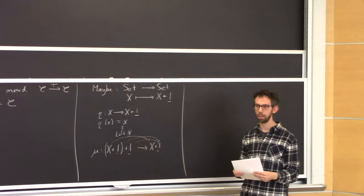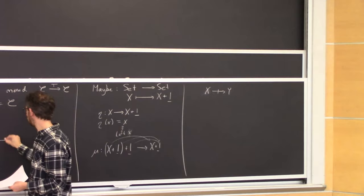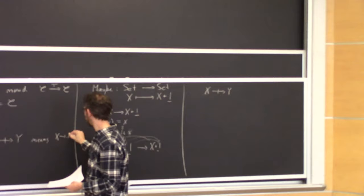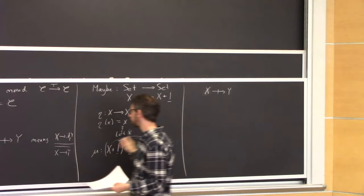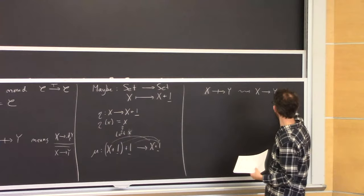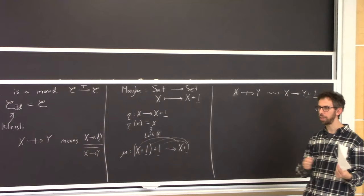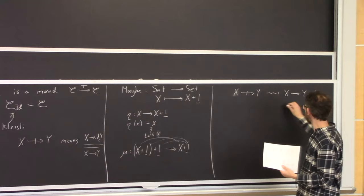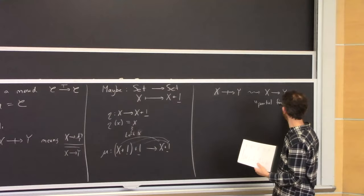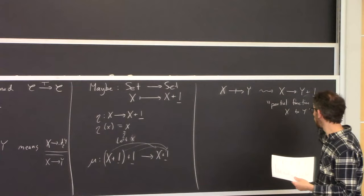What is the Kleisli category for the maybe monad? A morphism from X to Y in the Kleisli category means a function from X to Y+1. You can interpret this as a partial function from X to Y — every element of X either gets an element of Y, or it gets 'nothing.' Some things just evaluate to nothing; other things evaluate to Ys.